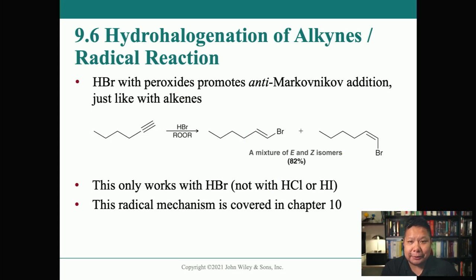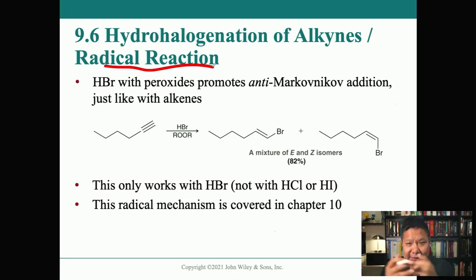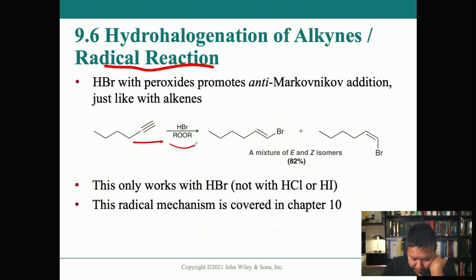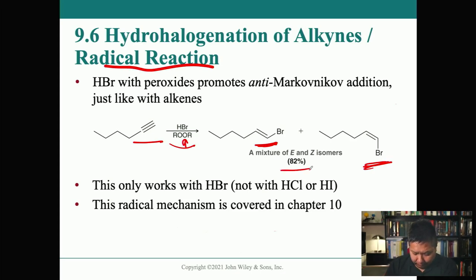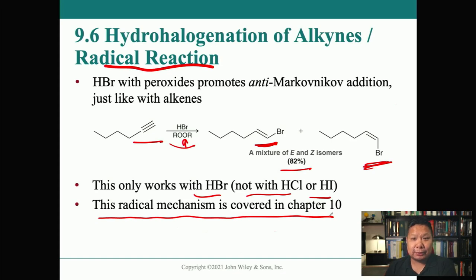You can also do hydrohalogenation of alkynes using a radical reaction. A terminal alkyne with HBr in the presence of a peroxide gives a mixture of E and Z isomers — about 80%. This only works with HBr, not HCl or hydrogen iodide. This radical mechanism is covered in Chapter 10, which will be the next lecture.